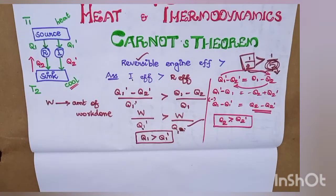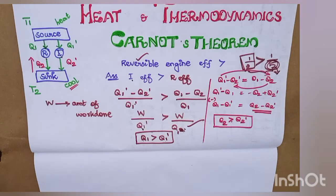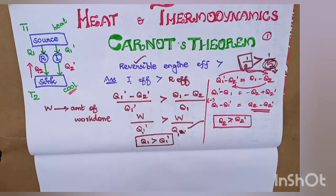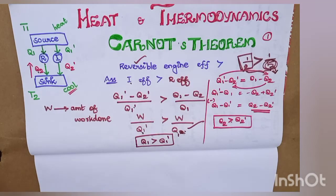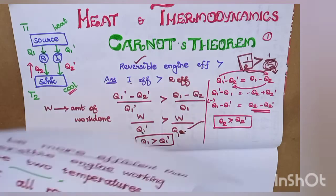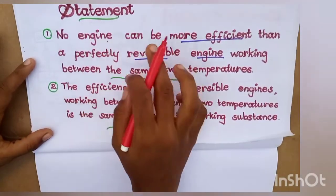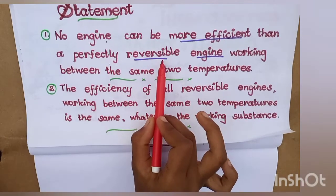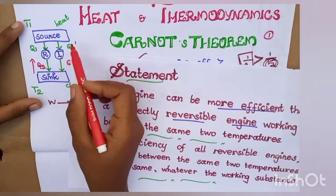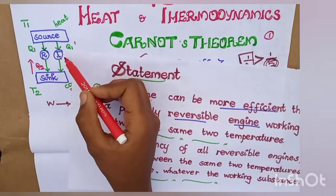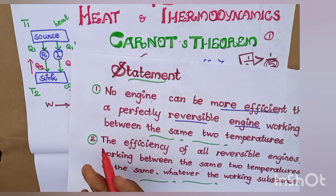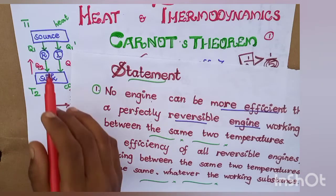This is Carnot's Theorem, first statement. So the first statement I am going to prove to you now. To recap: no engine can be more efficient. So what engines can be more efficient? A perfectly reversible engine. Let's look at the reversible engine and irreversible engine together. We can make the assumption, but the assumption is wrong — we can prove it.